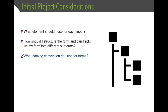The third initial project consideration is what naming convention you want to use for your forms. Assuming you'll break your form into subforms and have multiple data collection projects, you want a naming convention that is easy to understand and allows you to find your forms quickly as you build an ever-increasing forms library. Later, when we talk about best practices, I'll share a naming convention we've developed that is a good compromise of being brief but also descriptive.